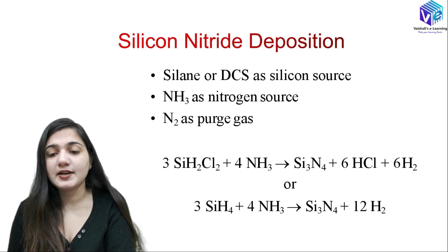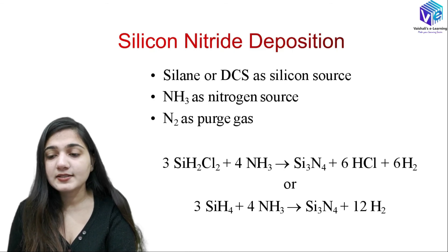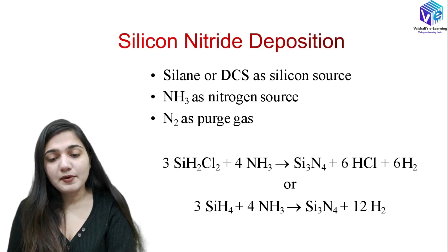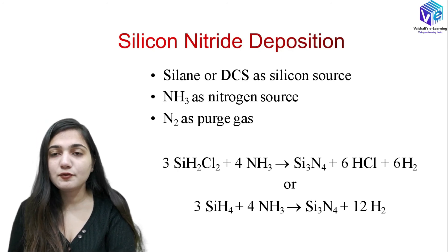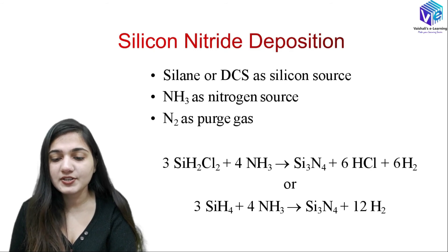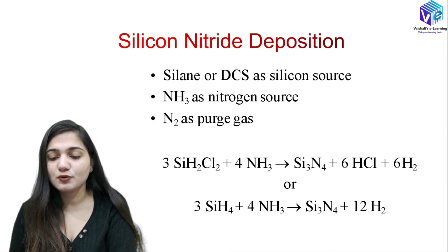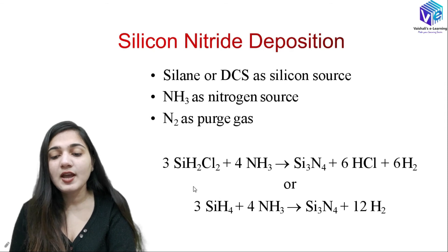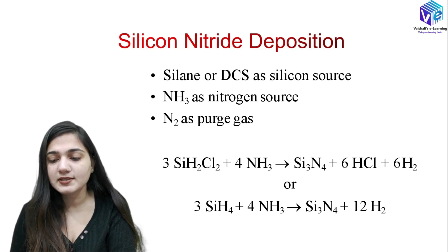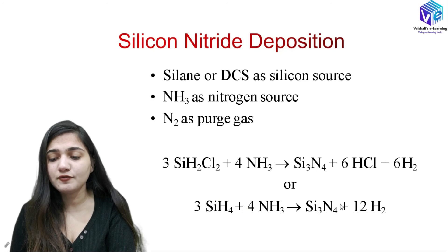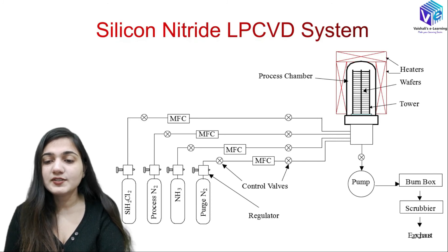Coming to the deposition of silicon nitride — silane or dichlorosilane will be used as the silicon source, NH3 will be used as the nitrogen source, and nitrogen as the purge gas. The reaction: 3 SiH2Cl2 + 4 NH3 → Si3N4 + 6 HCl + 6 H2. Alternatively using silane: the silane reacts with ammonia to form silicon nitride and hydrogen gas. Dichlorosilane reacts with ammonia to form silicon nitride with hydrochloride and hydrogen gas as gaseous by-products.